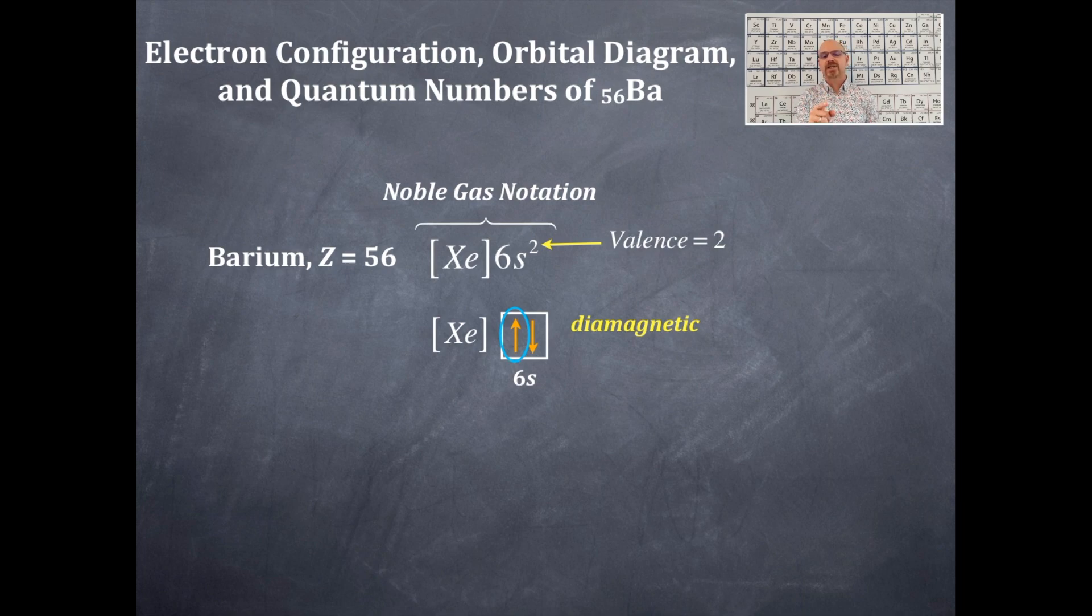Now the next one is to get the m sub l value. The m sub l value is the type of box that it is in. Which box is it in? So you're going to label the box as zero and you can't do the one or the negative one or the negative two or the positive two either.